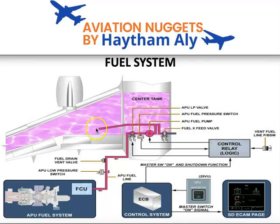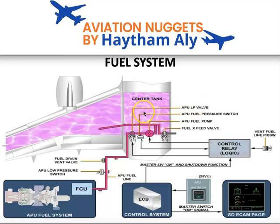As you can see, you can clearly say that the APU takes fuel from the left-hand collector cell. Fuel is supplied to the APU through the APU low pressure valve. This valve is operated by two electric motors. The APU low pressure valve will open with the master switch — when you press the master switch, the pump may operate according to the pressure in the line, and the low pressure valve will open.